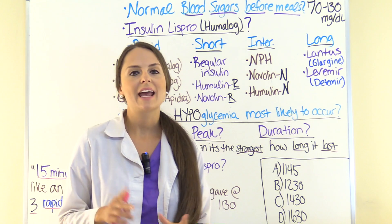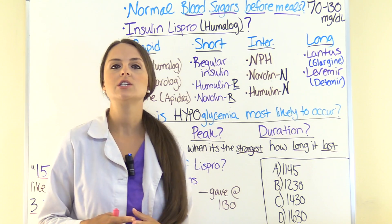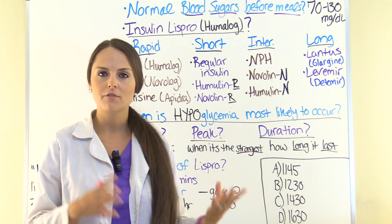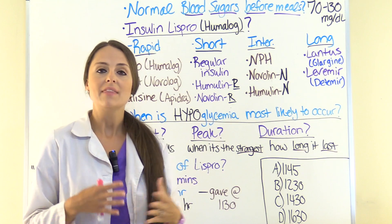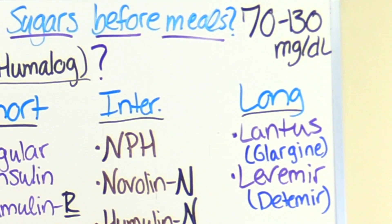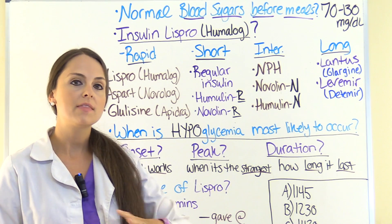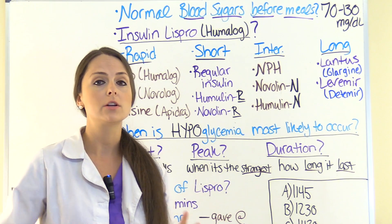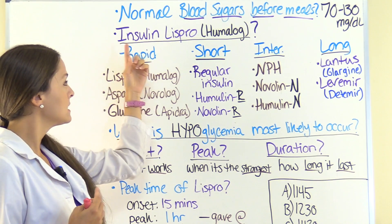So the first thing we want to do is analyze our scenario. The scenario tells us the patient's blood sugar is 215 mg per deciliter. You should be asking yourself: what is a normal blood sugar before meals? A person should run anywhere between 70 to 130 mg per deciliter. So our patient is high in their blood glucose, and we want to provide insulin coverage before they eat their meal, because this is going to increase their blood sugar even more.